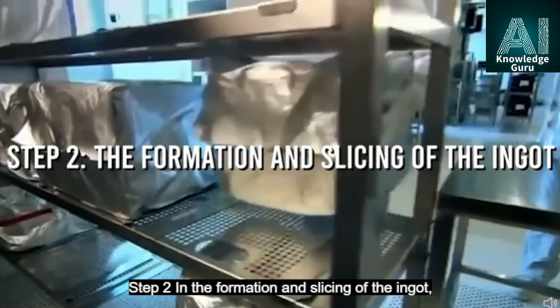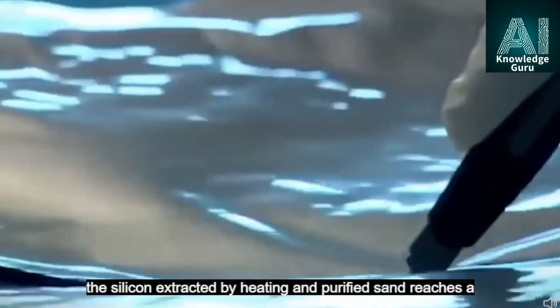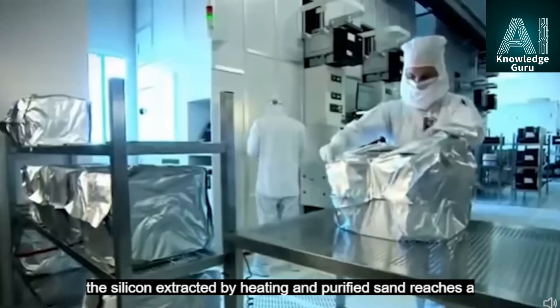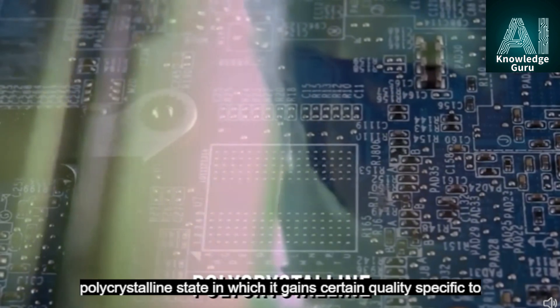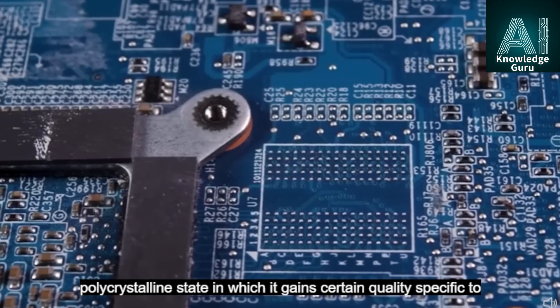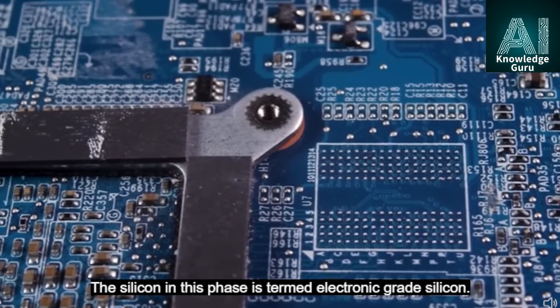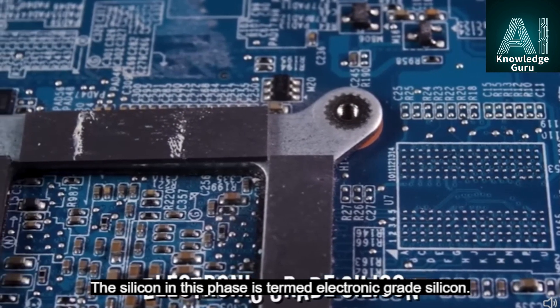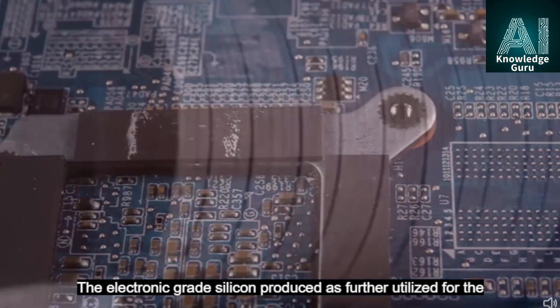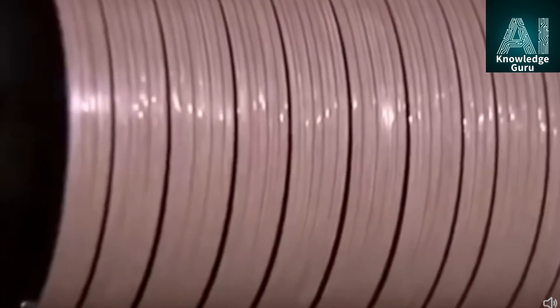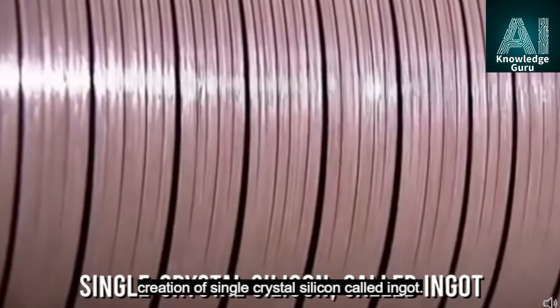Step 2: The formation and slicing of the ingot. The silicon extracted by heating purified sand reaches a polycrystalline state in which it gains certain qualities specific to creating a semiconductor. The silicon in this phase is termed electronic-grade silicon. The electronic-grade silicon is further utilized for the creation of single crystal silicon called ingot.